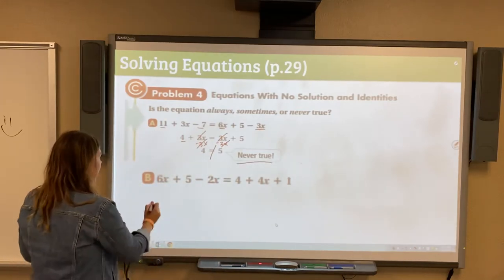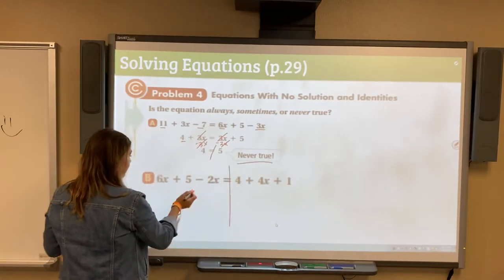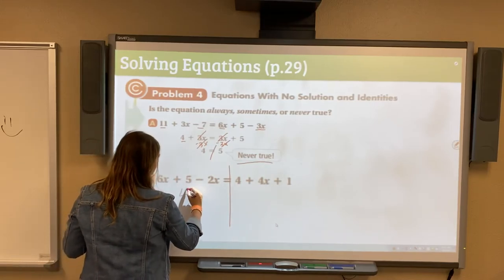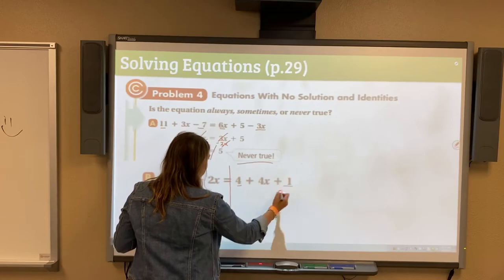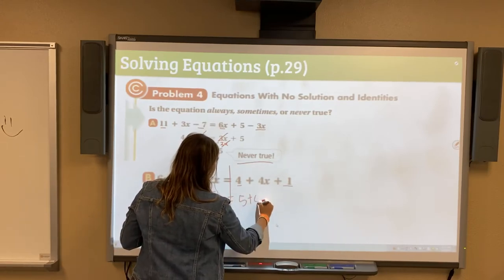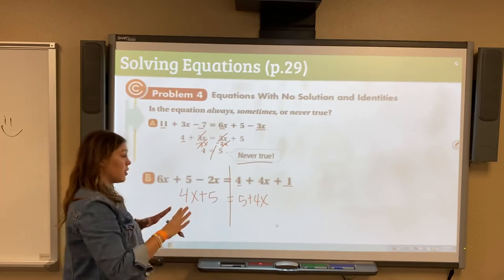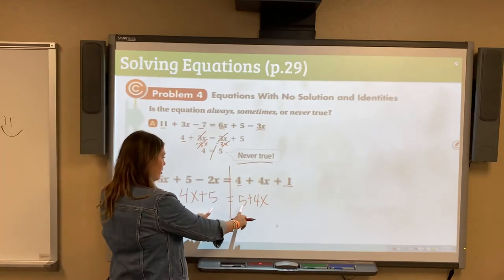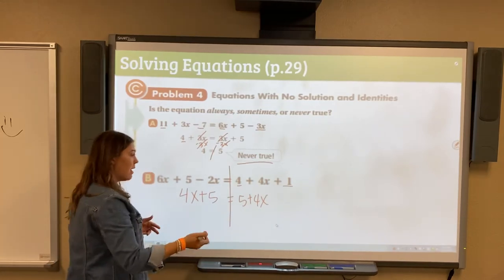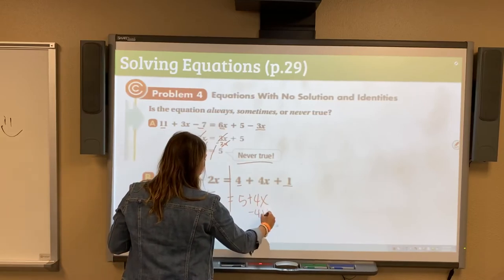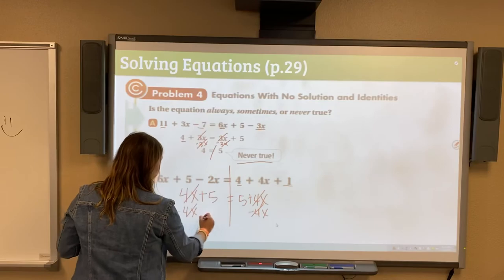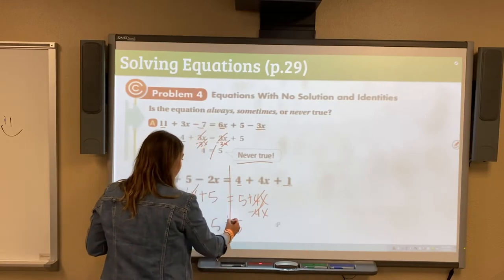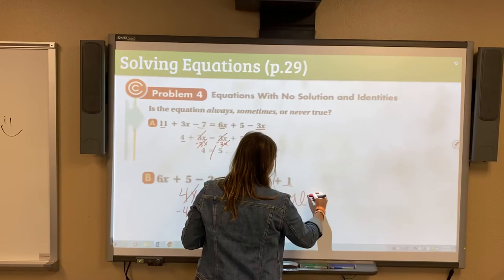Let's look at this one. We have 6X minus, we're going to simplify, 6X minus 2X is 4X plus 5. Here, we have 4 plus 1 to be 5 plus 4X. You can pause here and look. Both are 5, both 4X. But essentially, if we subtract 4X, everything is going to cancel. Cancel, cancel, cancel, cancel, cancel. 5 equals 5. Yes, that is true. So this is always true.